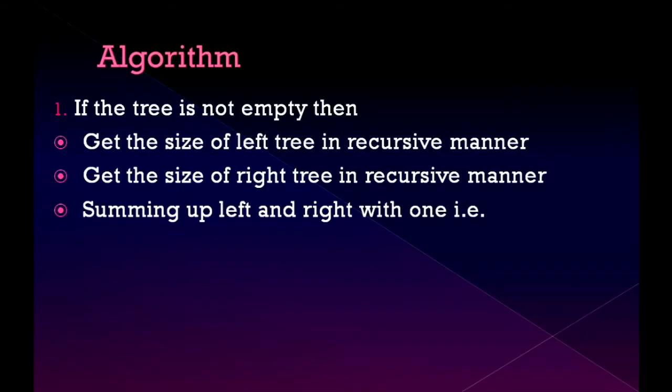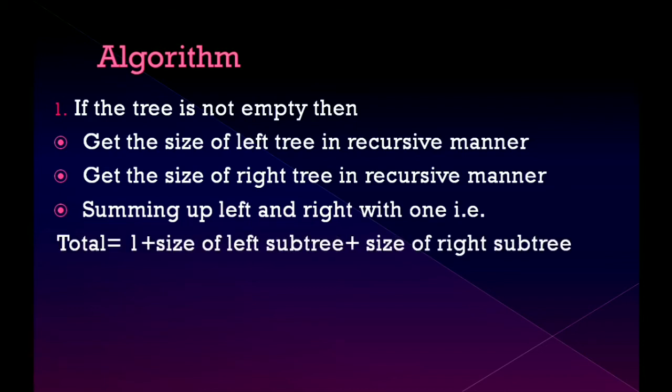If the tree is not empty then it will get the size of the left tree in recursive manner and after that it will get the size of the right tree in recursive manner. Finally, it will sum up left and right with 1, or else if the condition is wrong it will simply return 0.